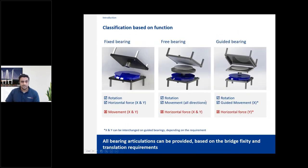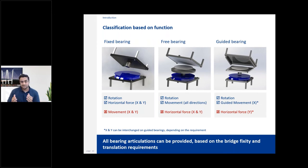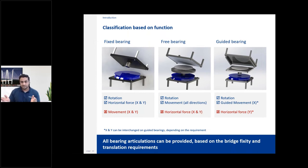Classification based on function: there are three kinds of bearings — fixed, free, and guided. Fixed bearings don't allow any movement. Free bearings allow movement in all directions. Guided bearings can be locked in one direction and allow movement in the other. You can also combine functions, such as making a bearing free during construction and fixed during service. For example, in gantry construction, a bearing can be fixed when a span is placed but made free once construction is complete.